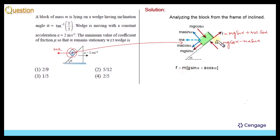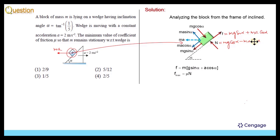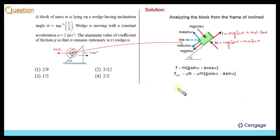Now let us calculate the limiting friction force, that is the maximum possible value of the friction force. This value is equal to μ multiplied by N. N is equal to MG cos α minus MA sin α. Again, we can take m as common. So this value is μ multiplied by m(G cos α minus A sin α). We know this block is not sliding.